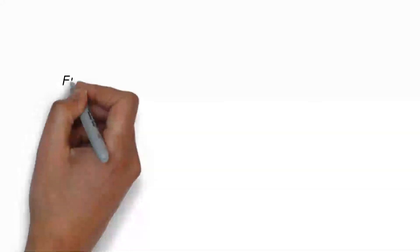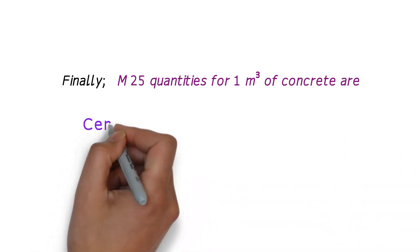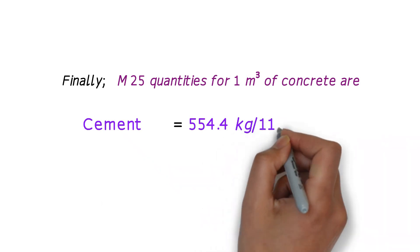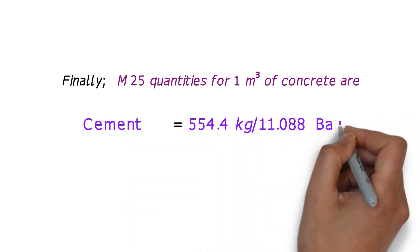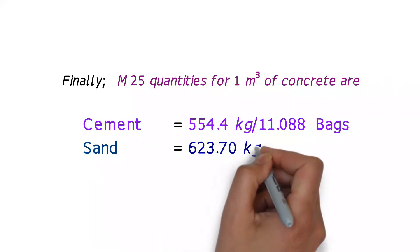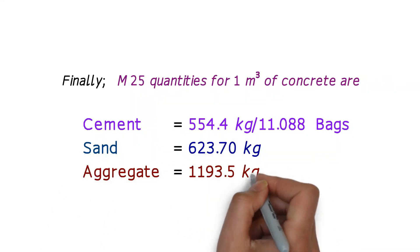The final values of cement, sand, and aggregate for M25 grade concrete of volume 1 meter cube are: Cement is 554.4 kg or 11.088 bags. Sand is 623.70 kg. Aggregate is 1193.5 kg.